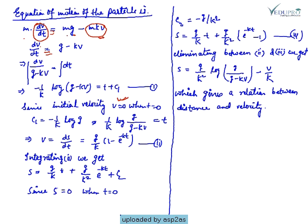Because initially velocity is 0 when time is 0, so if you have t equals 0 and V equals 0 in this equation, then C1 value will be minus 1/K log g. So if we substitute C1 value in equation 1, then we have 1/K log(g/(g - KV)) equals t.